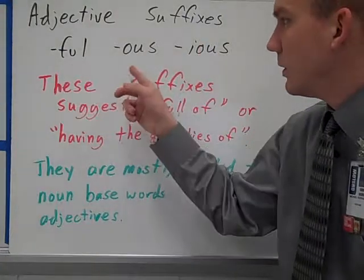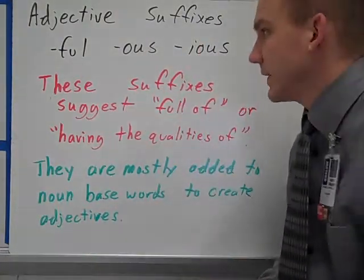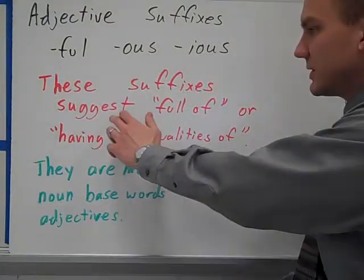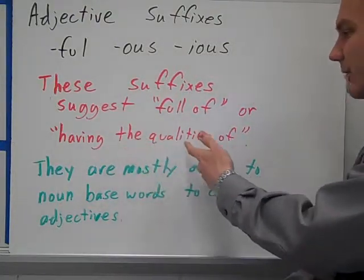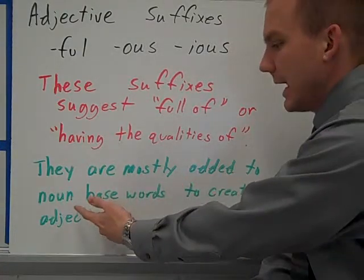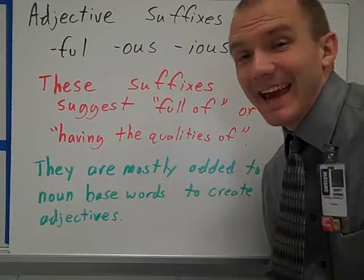Adjective suffixes: -ful, -ous, and -ious, generally pronounced as 'us'. These suffixes suggest 'full of' or 'having the qualities of' something. They're mostly added to noun base words to create adjectives.